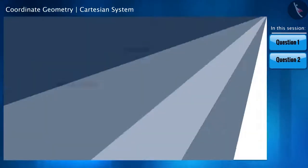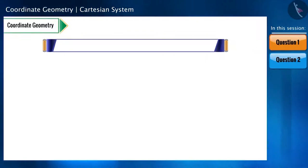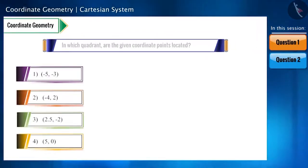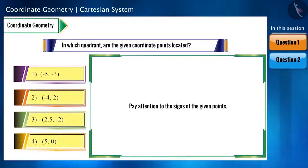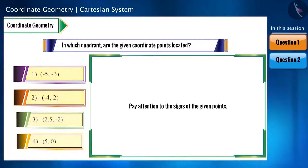Let's take the first question. In which quadrant are the given coordinate points located? In such questions, pay attention only to the signs. We don't have to state the exact position of the points, but only in which quadrant they are.